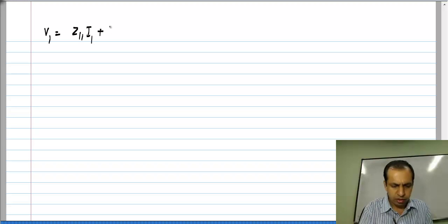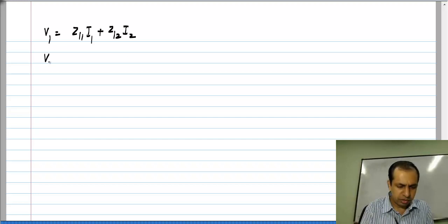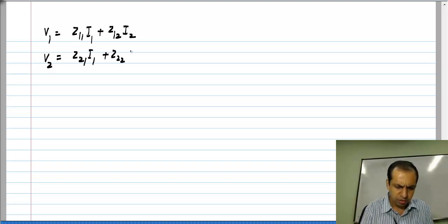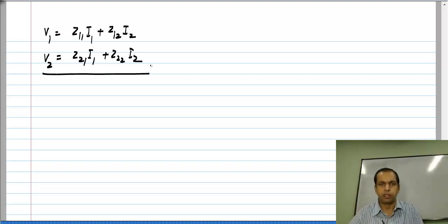Now, let's say you're given a network and asked to find the Z parameters. You need four measurements because you have four parameters. By taking four possible combinations of I1 and I2, measure V1 and V2 for each case, you'll get four equations, and from that you can solve for the four parameters.